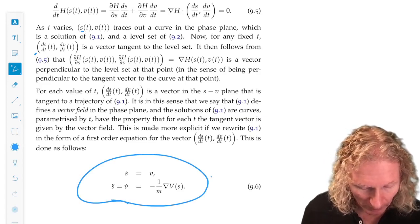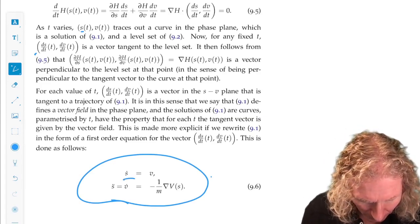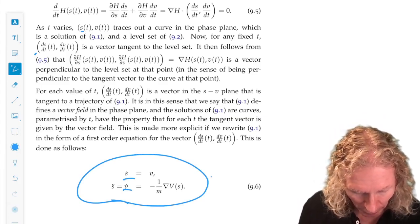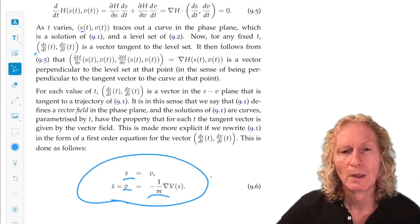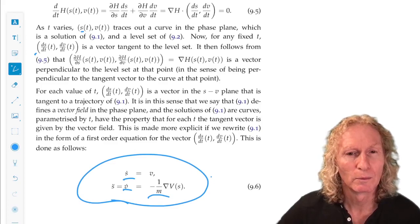So s dot equals v. And then v dot is s double dot, which is just the right hand side, which is Newton's equation.